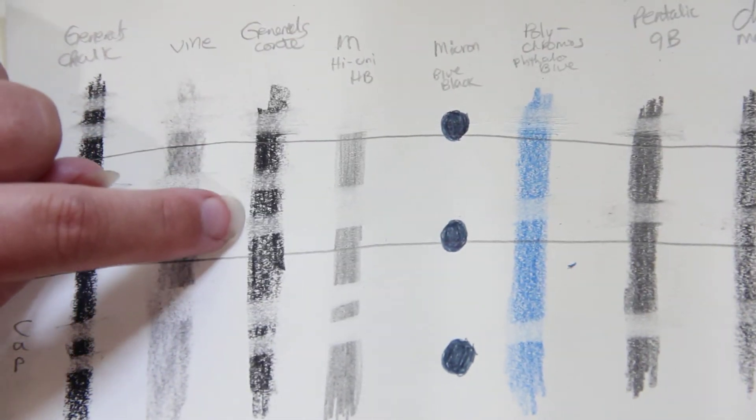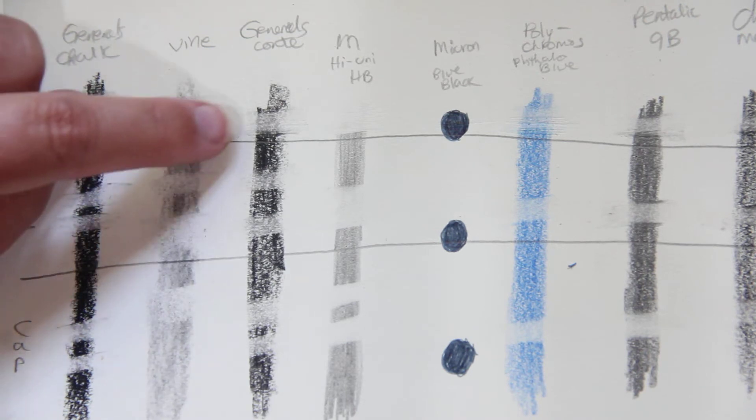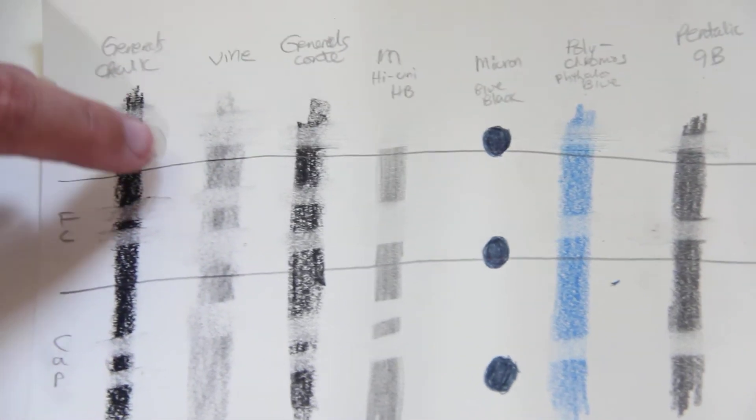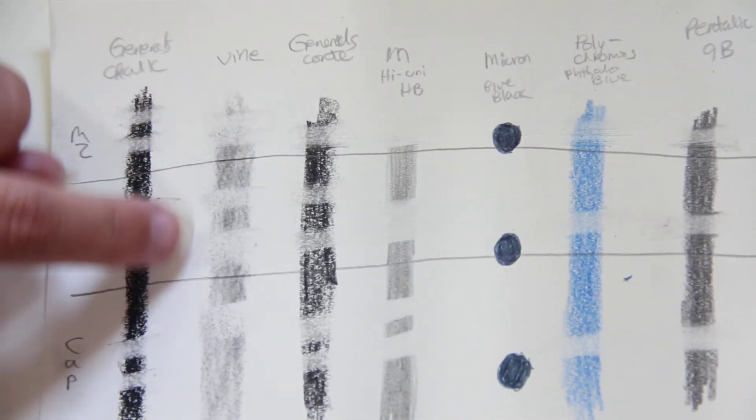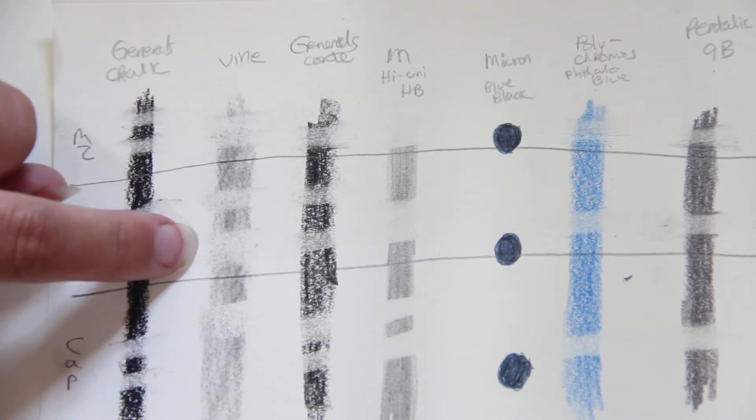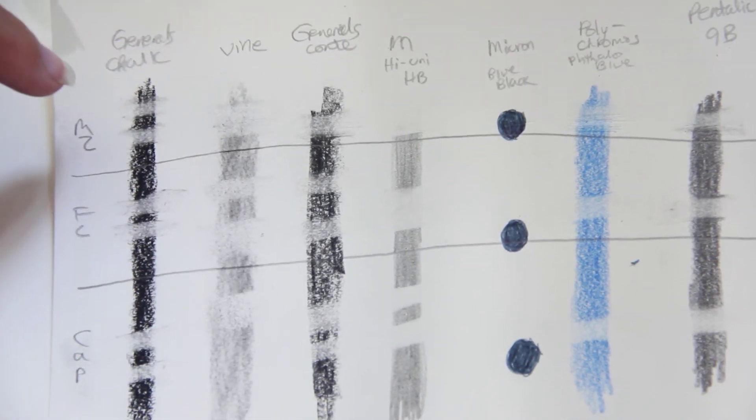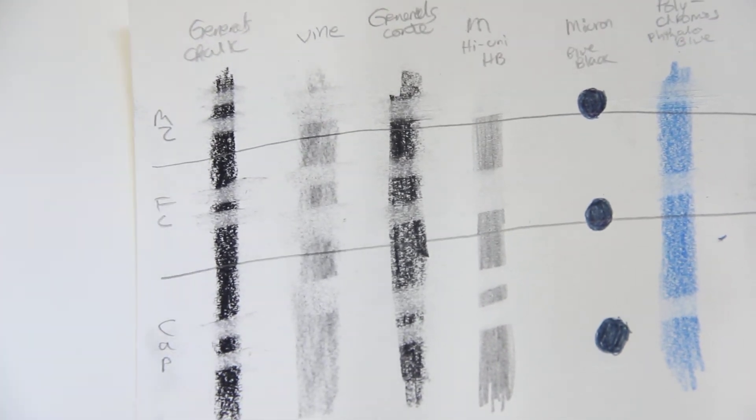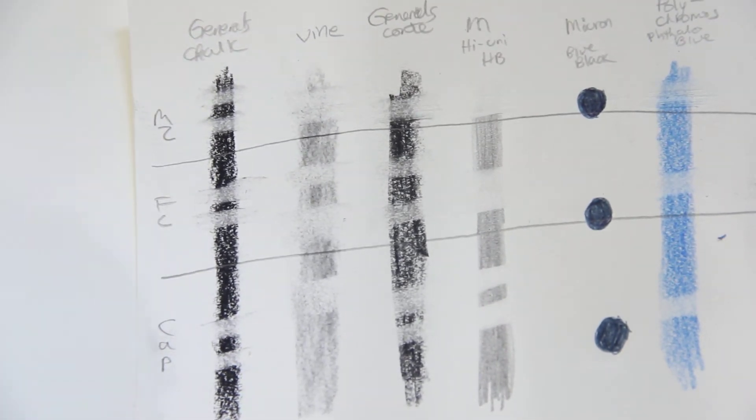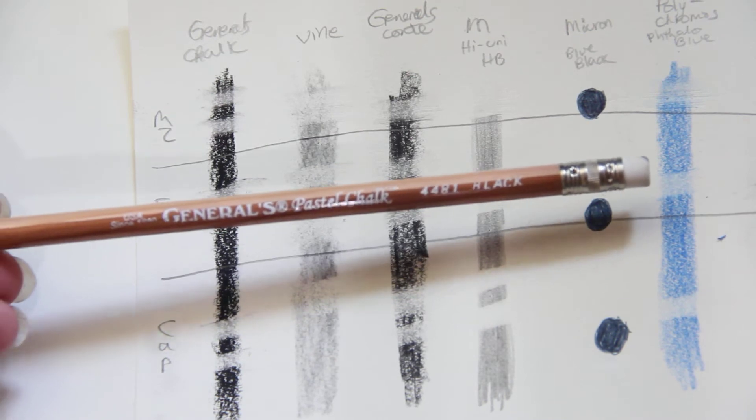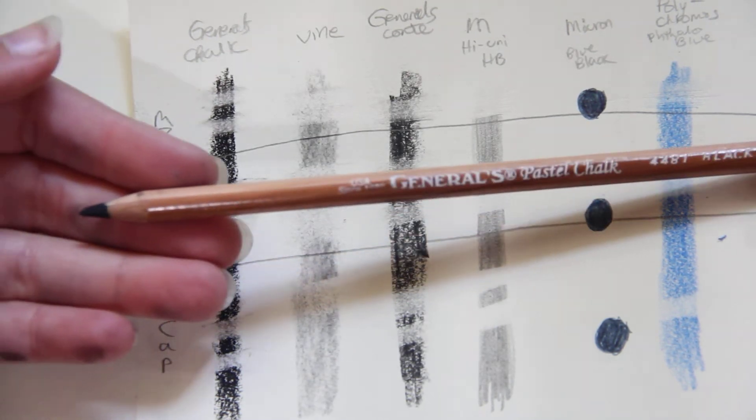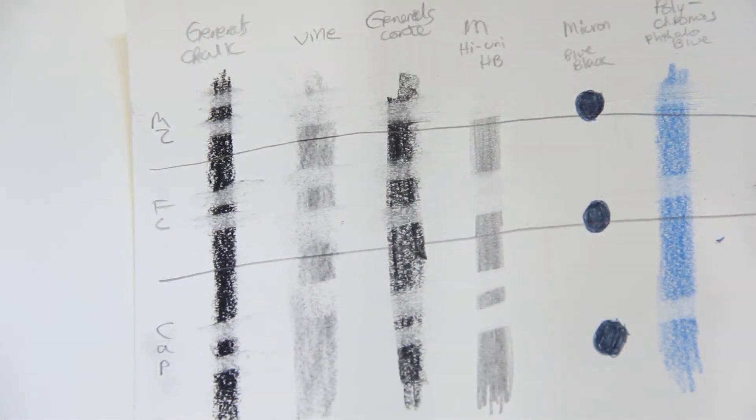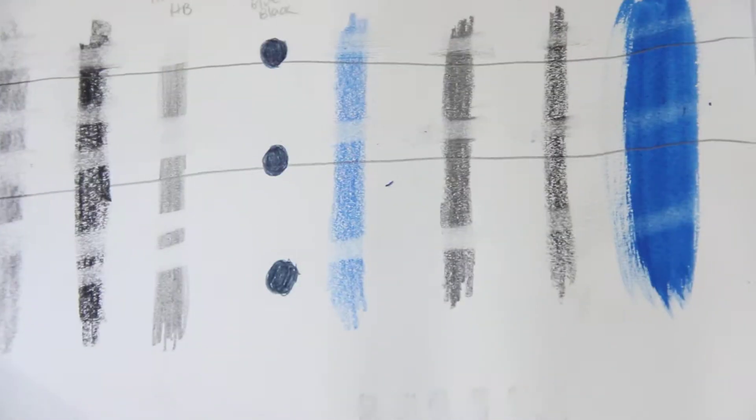The General's Conte. They're so similar. It's negligible, the difference. Vine. It's the same. And then here's the General's chalk pencil. And this is what the General's chalk pencil looks like. And I used the black one. And then here are the M's.